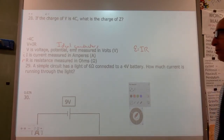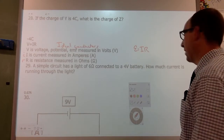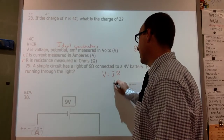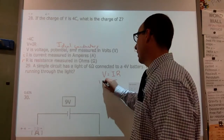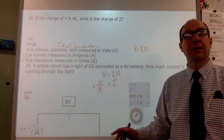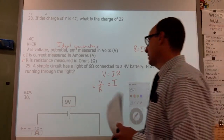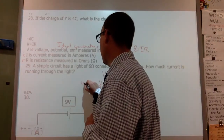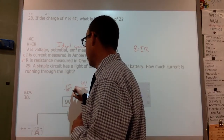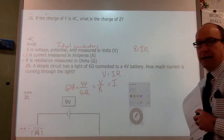A simple circuit has a light of six ohms connected to a four-volt battery. How much current is running through it? Using V = IR, I is V over R, so four volts divided by six ohms gives us 0.67 amperes.